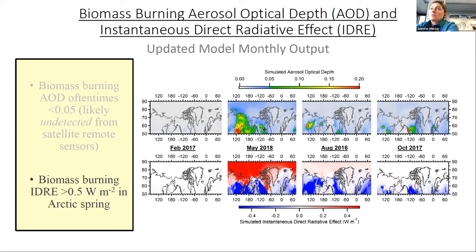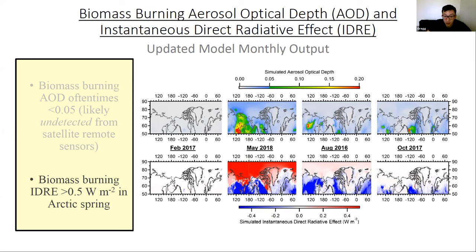If a congressional representative visited our research site and asked why this is important: these are among the first measurements of this type made over these regions, especially from an aircraft platform with vertical profiles — which are critical for climate-relevant variables. We don't have a lot of this kind of data; even a massively funded effort gives us only a few flights in the arctic.